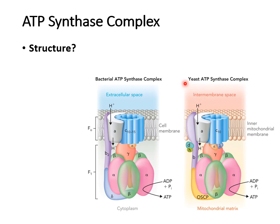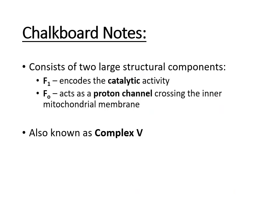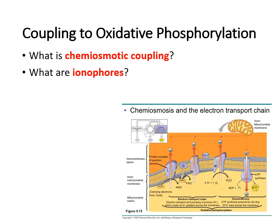The F-sub-zero portion is embedded in the membrane — the cell membrane in bacteria or the inner mitochondrial membrane in eukaryotes — and acts as the proton channel, allowing protons to cross the membrane. The F-sub-one portion encodes the catalytic activity of the enzyme; that is where the actual ATP production occurs.